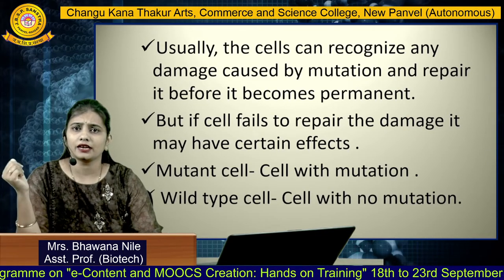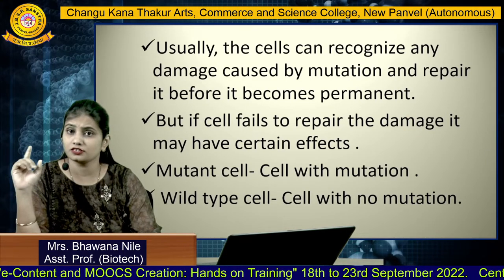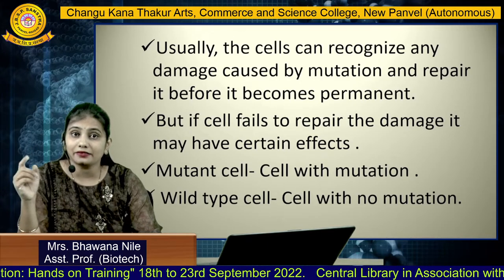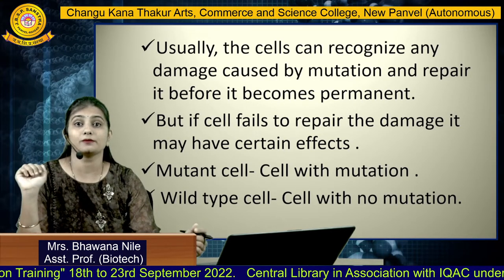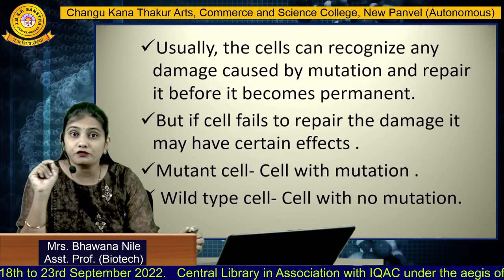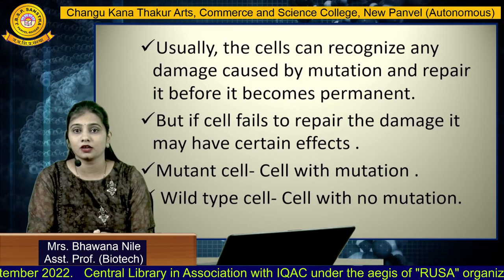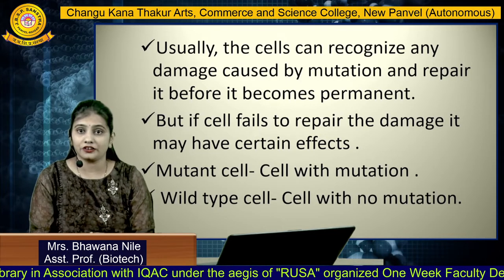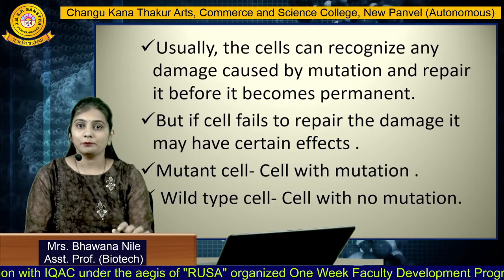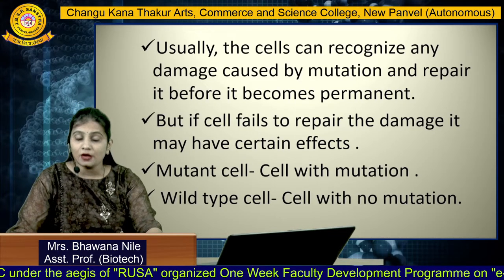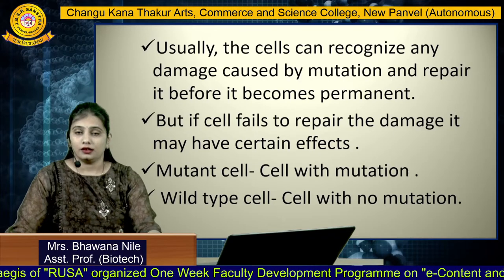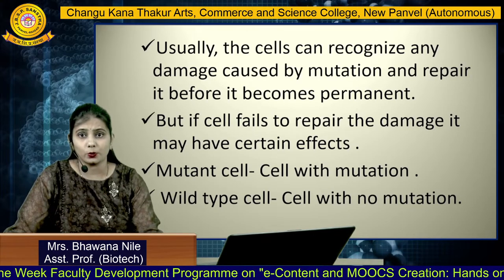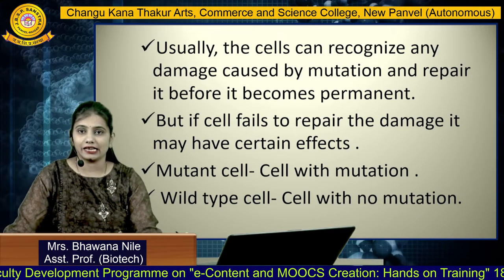Usually the cell can recognize any damage caused by the mutation. This is fortunate — your cells are able to understand the damage caused by mutation and can repair it before it becomes permanent. But if a cell fails to repair the damage, it may have certain effects. A cell which has faced the alteration becomes a mutant cell. A mutant cell can be defined as a cell which has mutations. Likewise, a cell which doesn't suffer any type of change or damage in the sequences is called a wild type cell, or a normal cell.